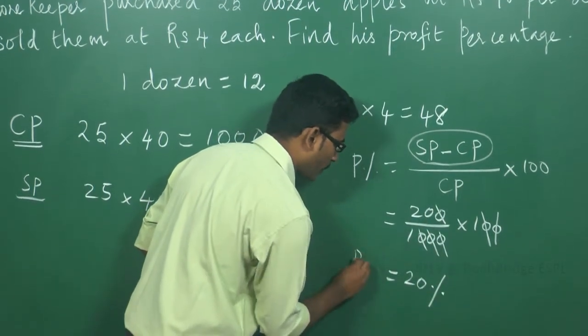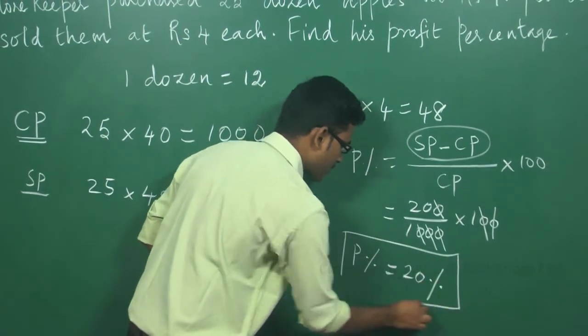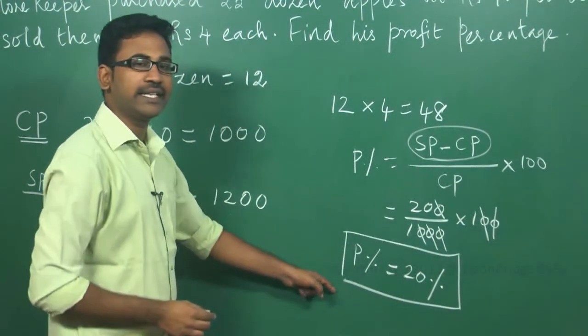On the whole, he is gaining a profit. The profit percentage in this transaction for the shopkeeper is 20 percentage.